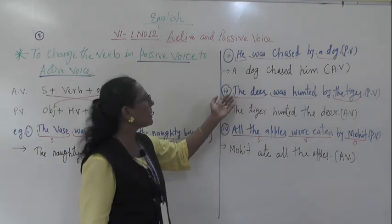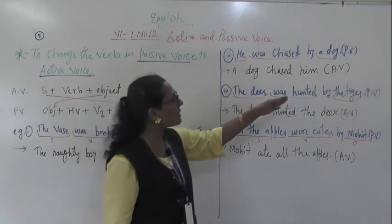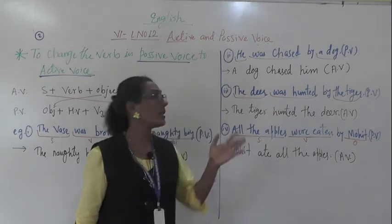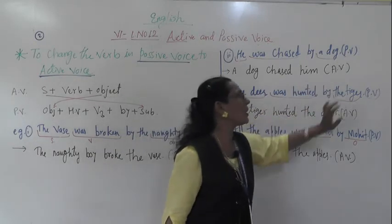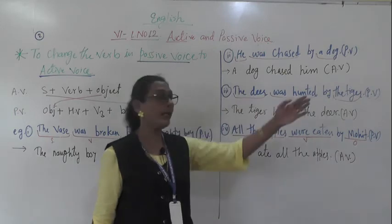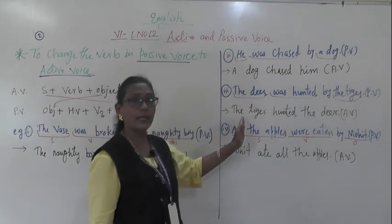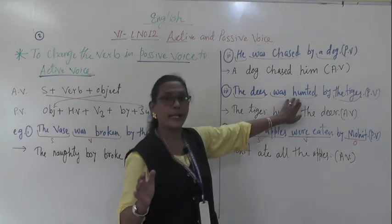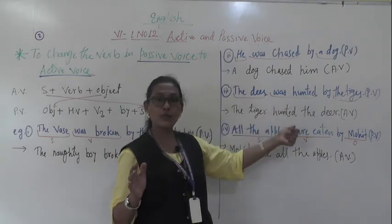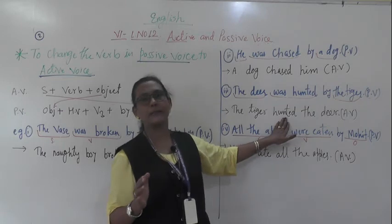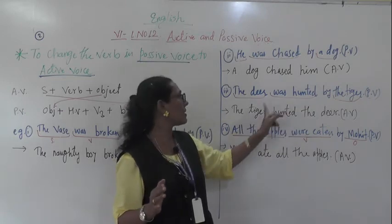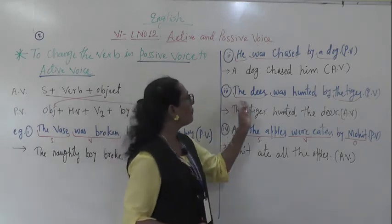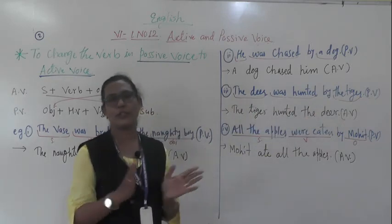Third example: 'The deer was hunted by the tiger.' Subject = 'the tiger.' 'Was' = past tense, so verb = 'hunted' (V2). Object = 'the deer.' Active voice: 'The tiger hunted the deer.'